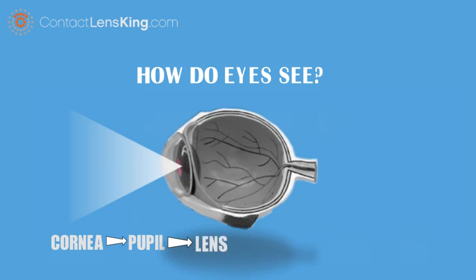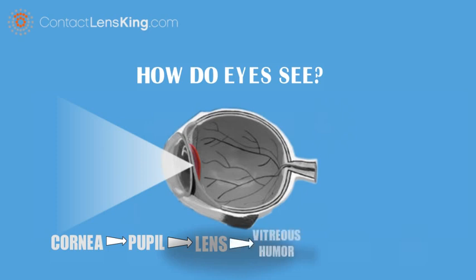After the pupil, it then travels to the eye's natural lens, which changes shapes to focus on near or distant objects. The light then goes through the vitreous humor, a clear fluid that helps maintain the eye's shape.